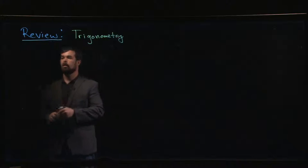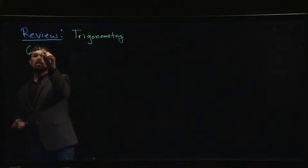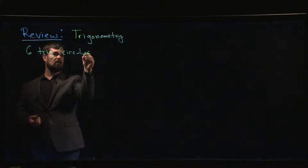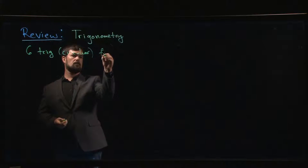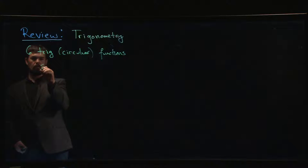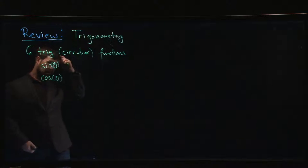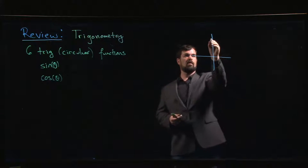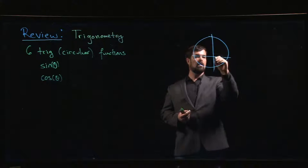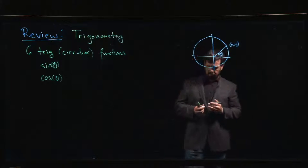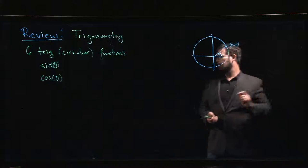Next we're going to look at the six trig functions — some will refer to these as the six circular functions, since we define them in terms of the unit circle. So we have sine theta and cosine theta. Cosine is the x-coordinate and sine is the y-coordinate on the unit circle, so these are the primary functions.